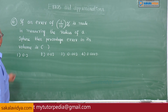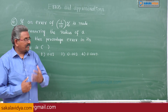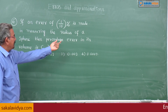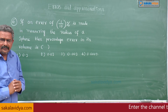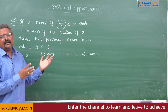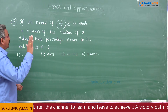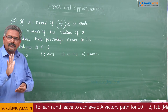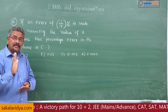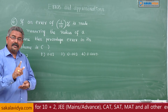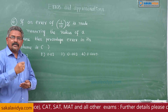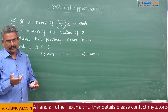Sixth problem: if an error of 1 by 10 percent is made in measuring the radius of a sphere, then what is the percentage error in its volume? This is a very simple and direct problem. The percentage error in radius is given and we have to find the percentage error in volume — that is, delta r by r into 100 is given as 1 by 10, and delta v by v into 100 is to be found.